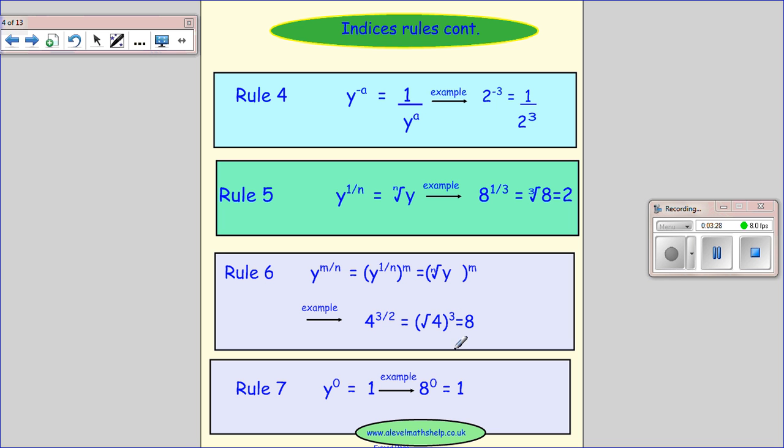And then the final rule is anything to the power of 0 is 1. So 8 to the power of 0 is 1. And that's something that you should learn. I hope that's helpful. I'm going to do a video now on exam-style questions. So hopefully you want to go and see that.